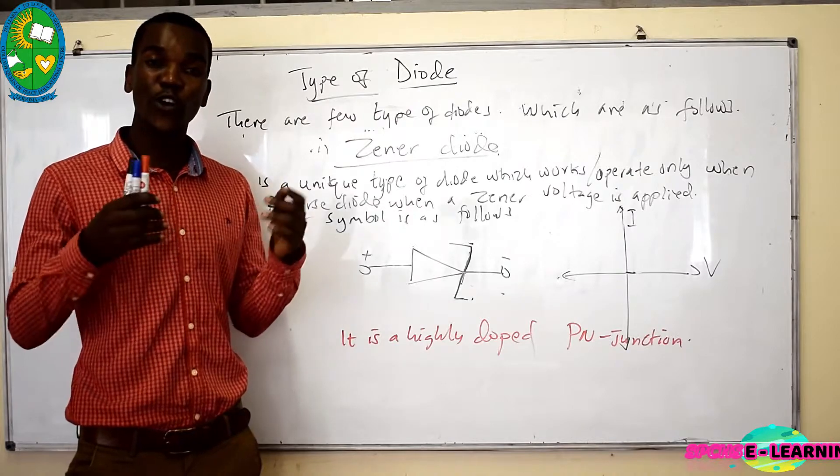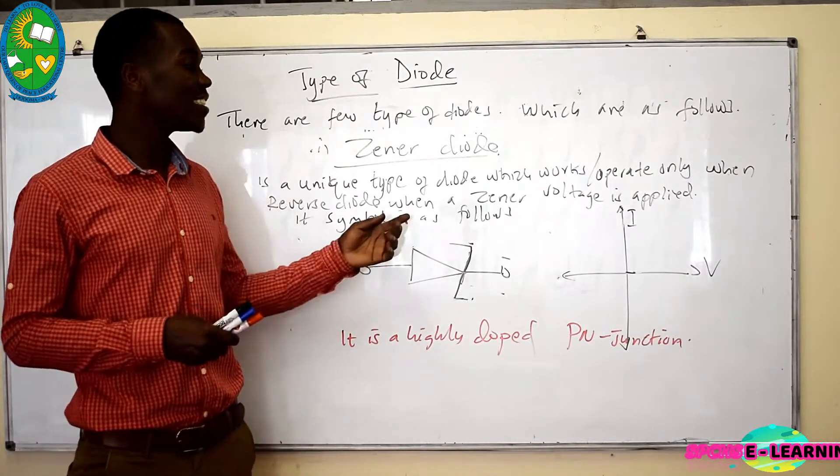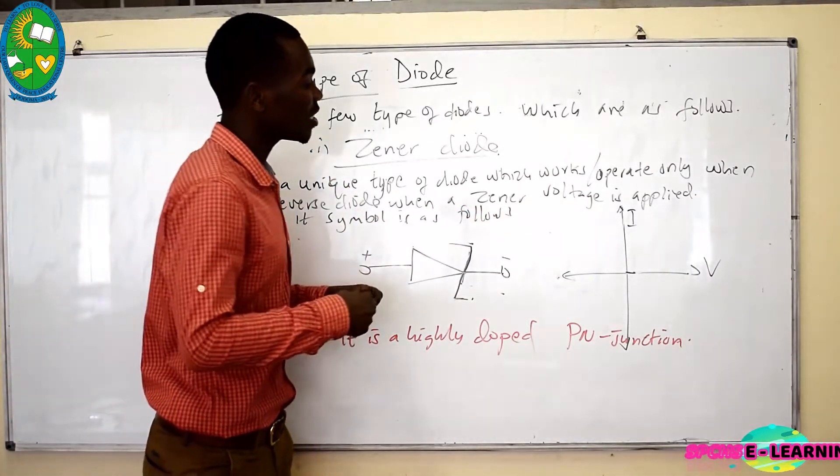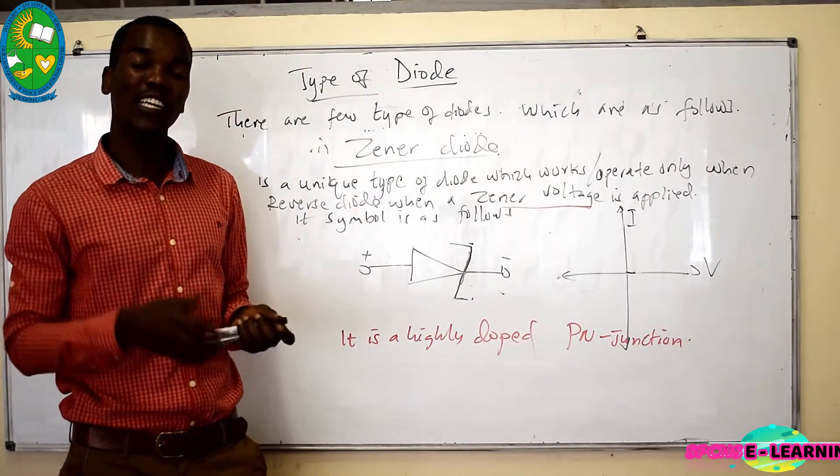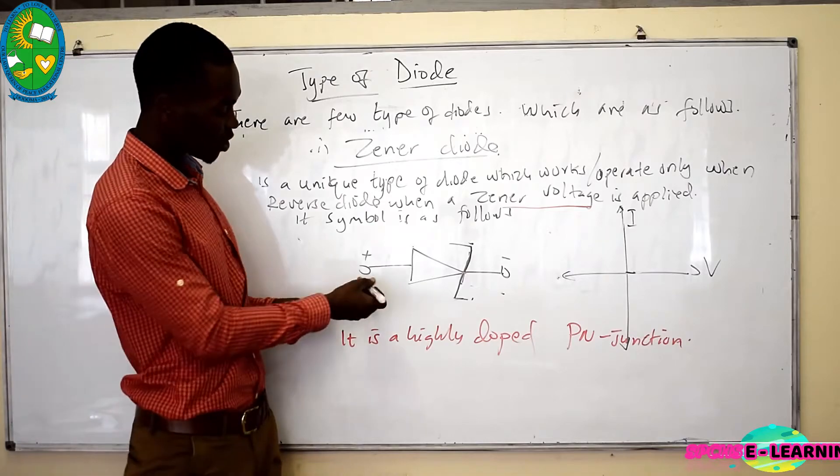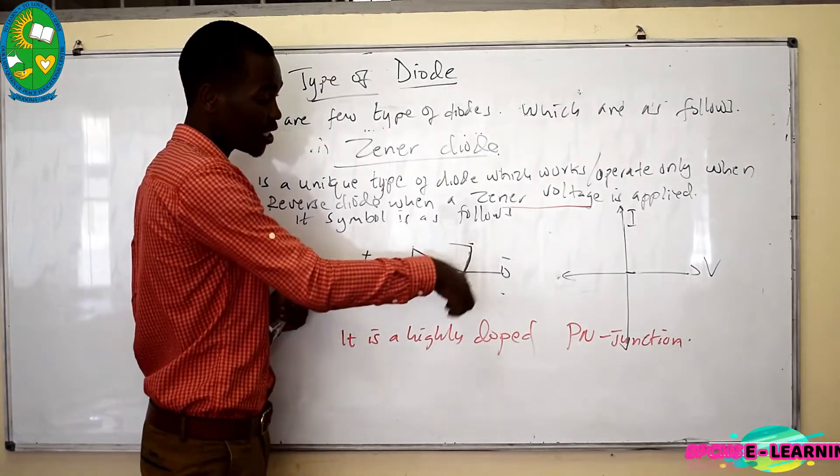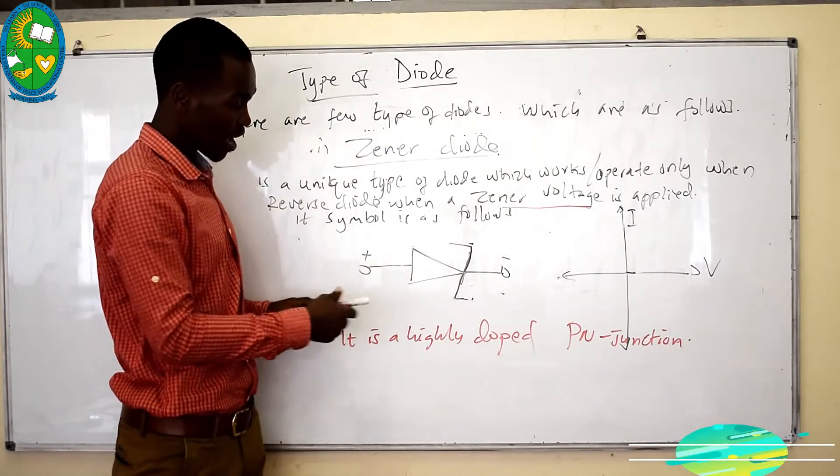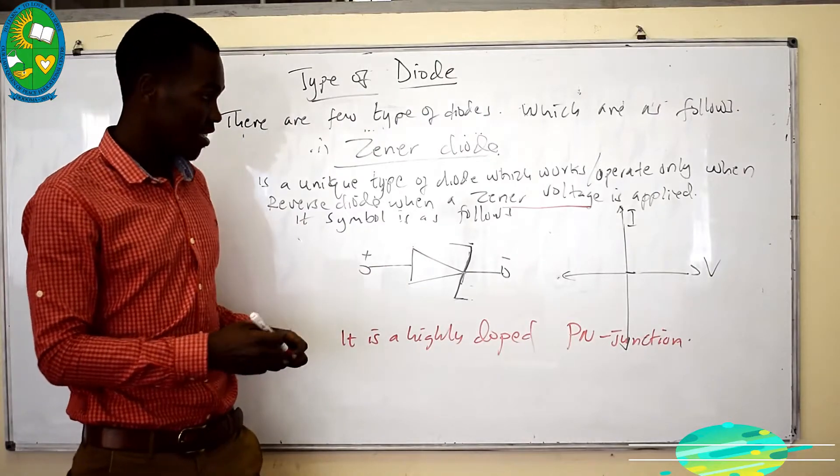But it will only conduct when the voltage applied reaches the so-called Zener voltage. This Zener voltage is a special amount of voltage at which a Zener diode will start to conduct. A symbol for Zener diodes is just like the normal diode but with a Z in it. This shows that this is a Zener diode.